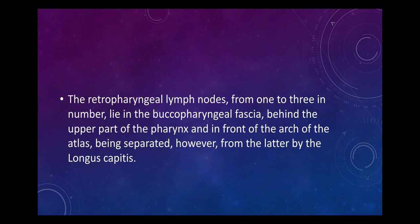The retropharyngeal lymph nodes, one to three in number, lie in the buccopharyngeal fascia behind the upper part of the pharynx and in front of the arch of the atlas, being separated from it by the longus capitis muscle.